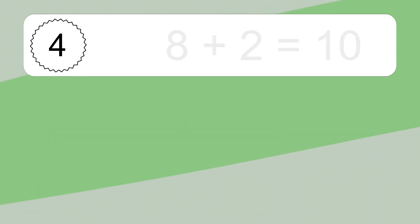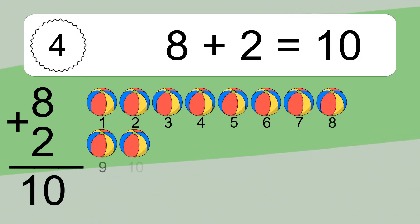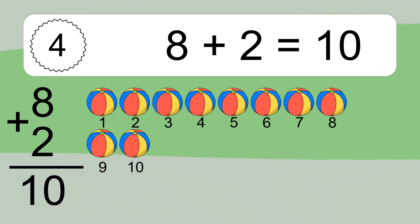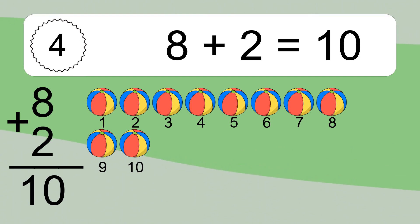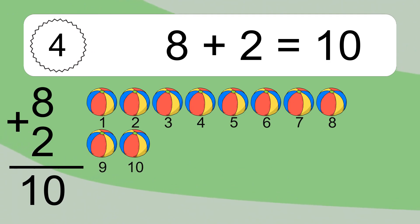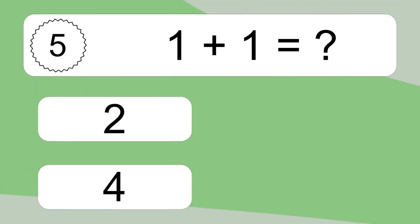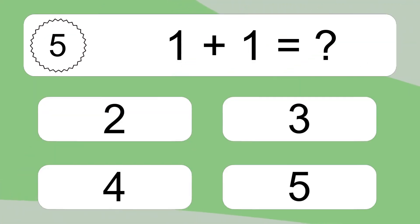8 plus 2 equals what? 8 plus 2 equals 10. Let's count it: 1, 2, 3, 4, 5, 6, 7, 8, 9, 10.